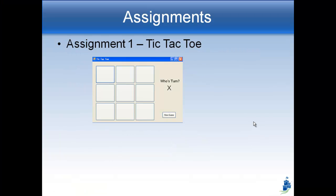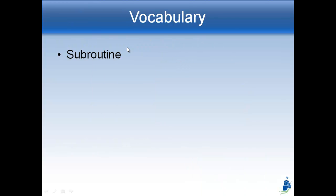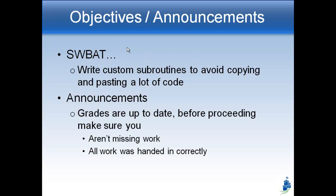You have two assignments. First, complete the full tic-tac-toe program — not just the whose-turn part, but also making X's and O's show up on the buttons. Second, go back to the project from last time: write a subroutine that resets the hangman game, so instead of having reset code appearing twice — once for winning and once for losing — you have one single subroutine that resets everything. Also update your vocabulary sheet with an example of how to write your own subroutine.